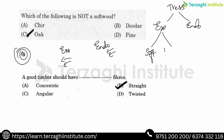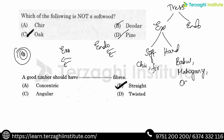Softwood examples include deodar, pine, spruce, and fir. Hardwood examples include mahogany, oak, sal, and teak. For engineering purposes, hardwood is used; softwood is used for minor works. Endogenous trees are used for specific engineering purposes. Exogenous trees provide both softwood and hardwood.